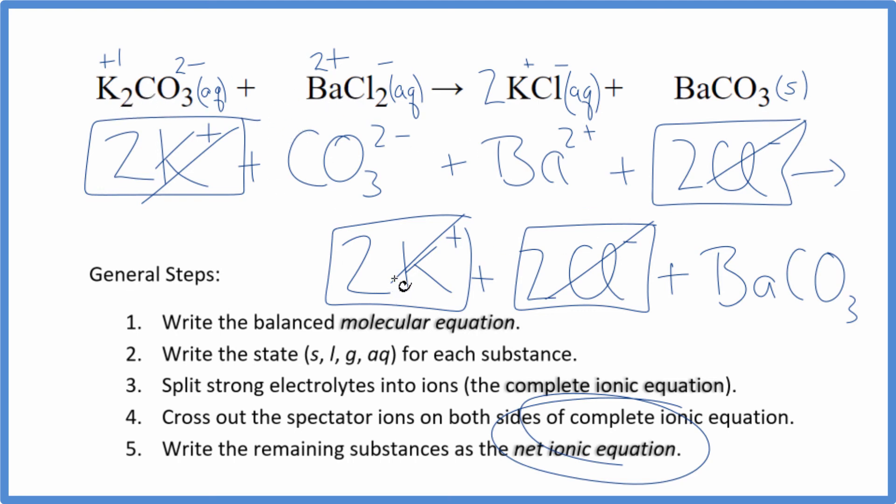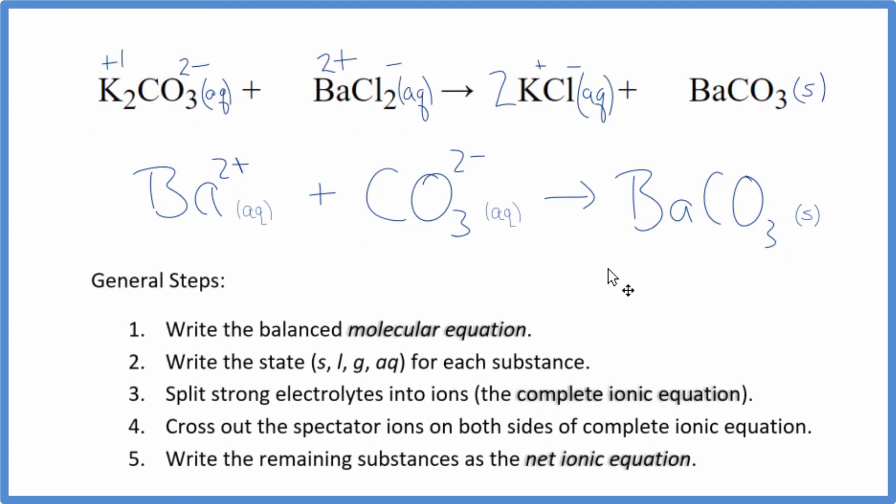I'll clean this up, write the states, and we'll have our net ionic equation. So this is the balanced net ionic equation for potassium carbonate and barium chloride. I put the positive ion first. It doesn't really matter, but maybe it looks a little nicer. Charge is balanced. You can see I have a two plus and a two minus. They add up to zero, net charge of zero. Over here, neutral compound, net charge of zero. The atoms, they're balanced as well.